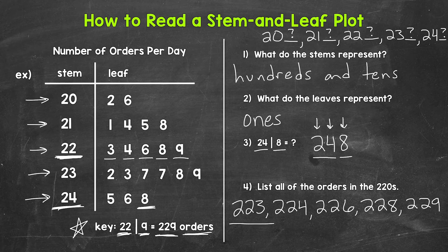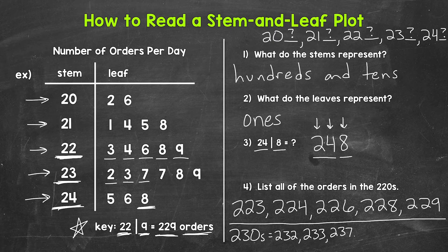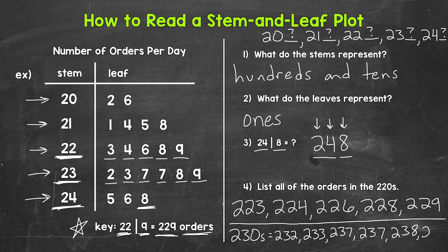Just in case you'd like one more example, let's go through the 230s. We need to look at the stem of 23. Starting with the leaf of two, that gives us 232. Then the leaf of three, so 233. Then the leaf of seven, so 237. Another seven, so 237 again. Then an eight, so 238. And then lastly a nine, so 239. There's our three-digit example.